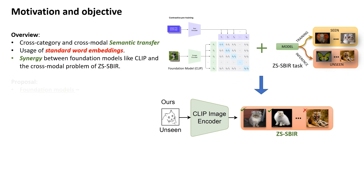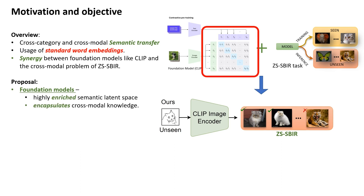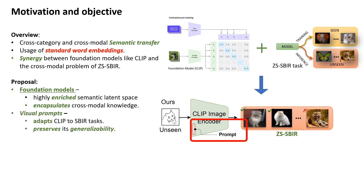CLIP exhibits a highly enriched latent space and already encapsulates knowledge across a myriad of cross-modal data. For ZS-SBIR, CLIP is therefore almost a perfect match, as it already provides a rich semantic space to conduct category transfer and has an unparalleled understanding of multimodal data which SBIR dictates. At the very heart of our answer to this synergy is prompt learning — learning a set of continuous vectors injected into CLIP's encoder — which enables CLIP to adapt to downstream tasks while preserving its generalizability.